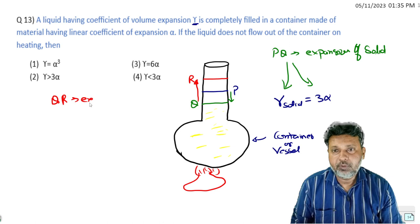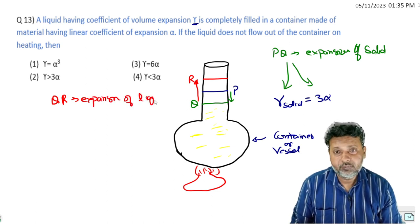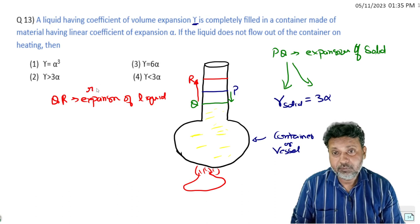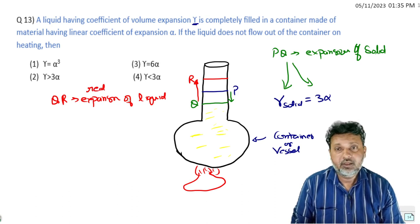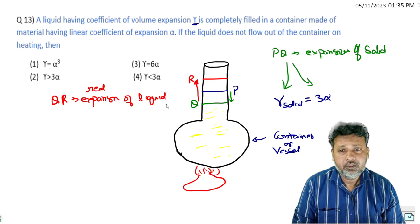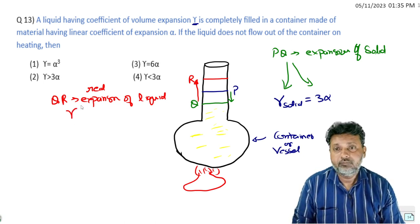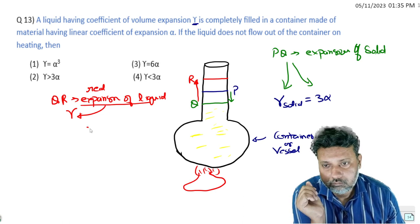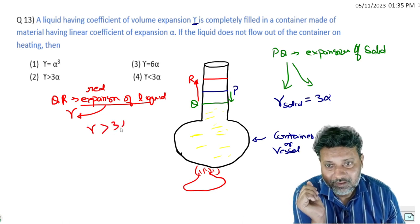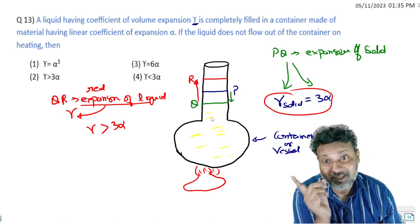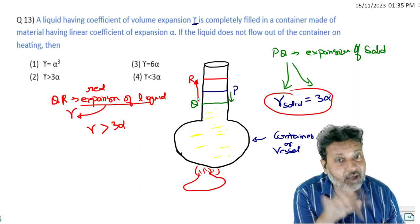Q से R जो expansion हुआ - यह real expansion of liquid है। इसे आप real expansion of liquid कह सकते हो। यानि यही है आपका gamma - यह expansion of liquid है, यह gamma है। अगर यह gamma ज्यादा होगा 3 alpha से - मतलब gamma of solid से ज्यादा होगा - तो पानी बाहर निकल जाएगा।